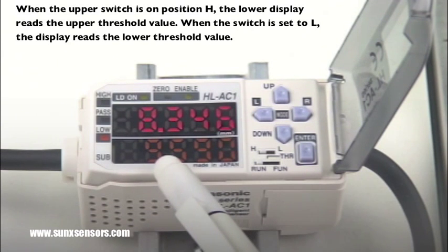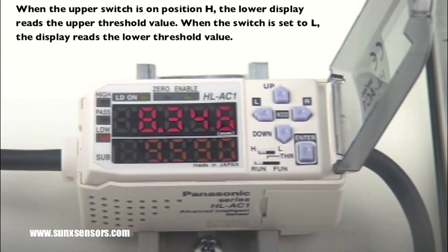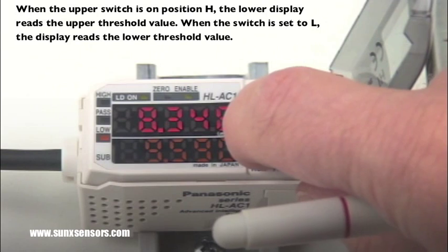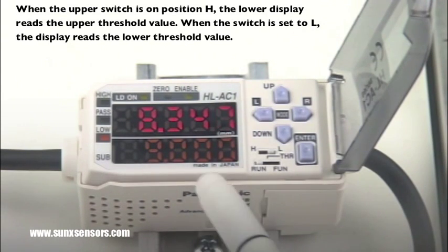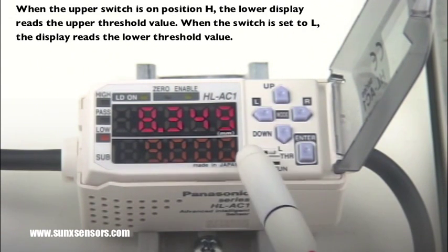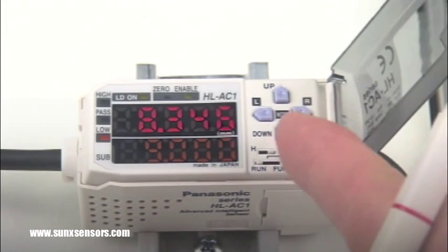The sub display reads out the threshold values. When the switch is set to H, it reads out the high threshold value. When the switch is set to L, it reads out the lower threshold value.